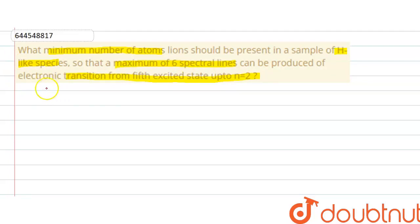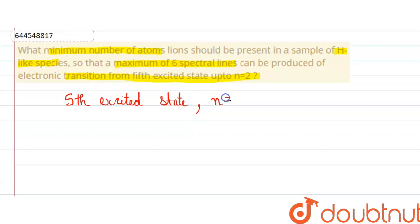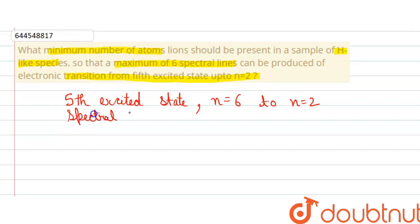Here we are given that the electronic transition is taking place from the fifth excited state. As we know, for the fifth excited state the value of n is six, so the transition is taking place from n equals to six up to n equals to two. The maximum six spectral lines can be produced.